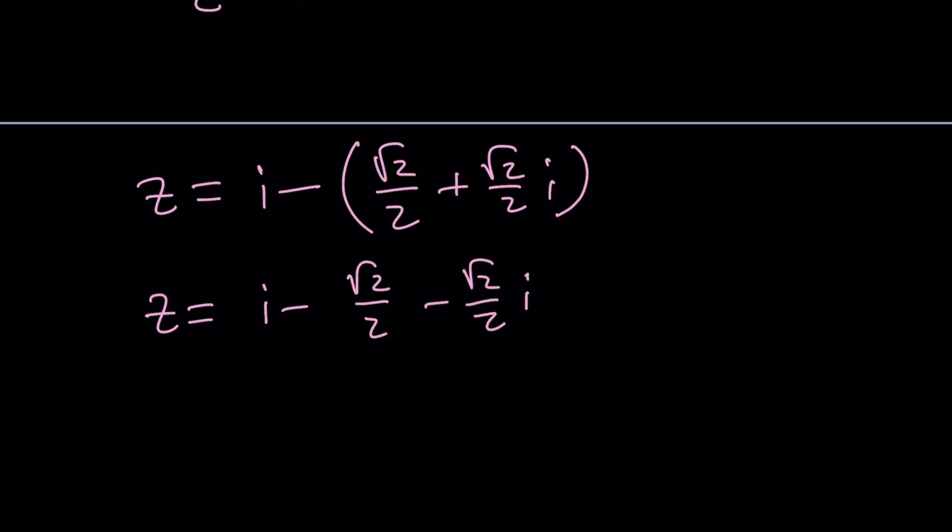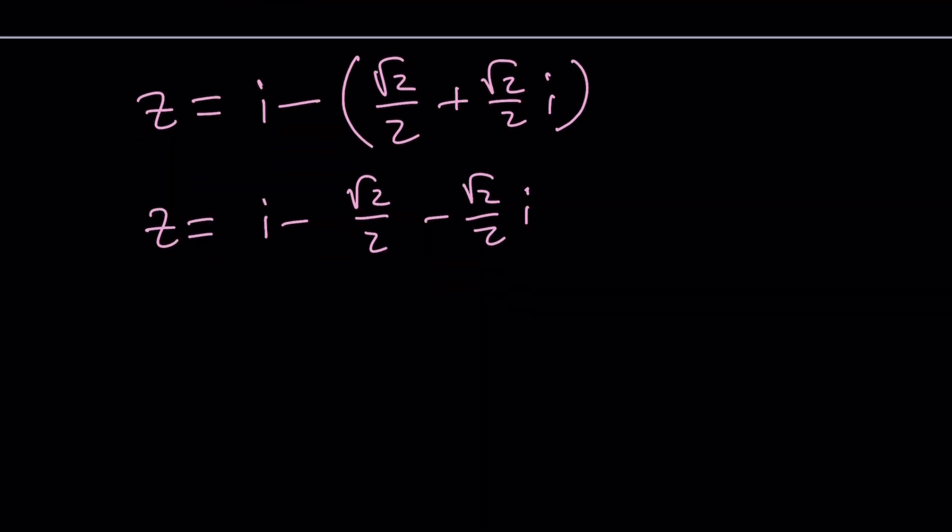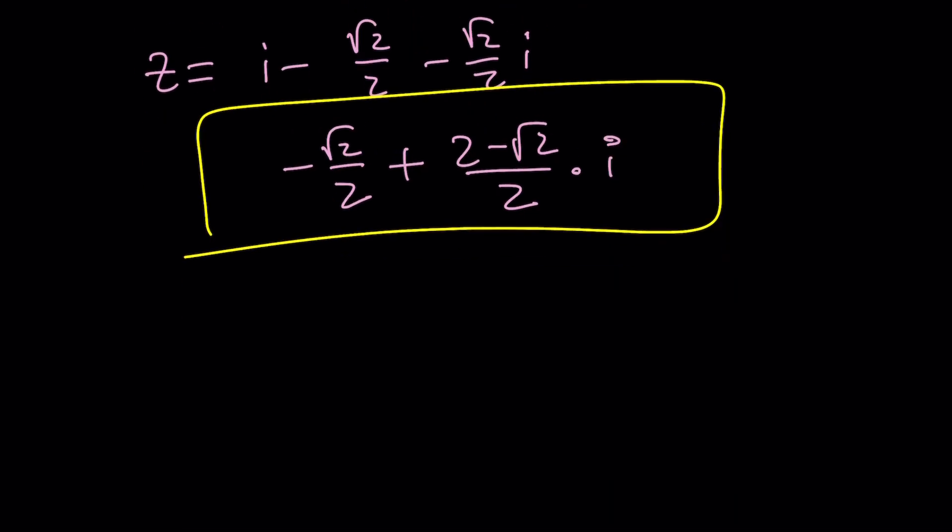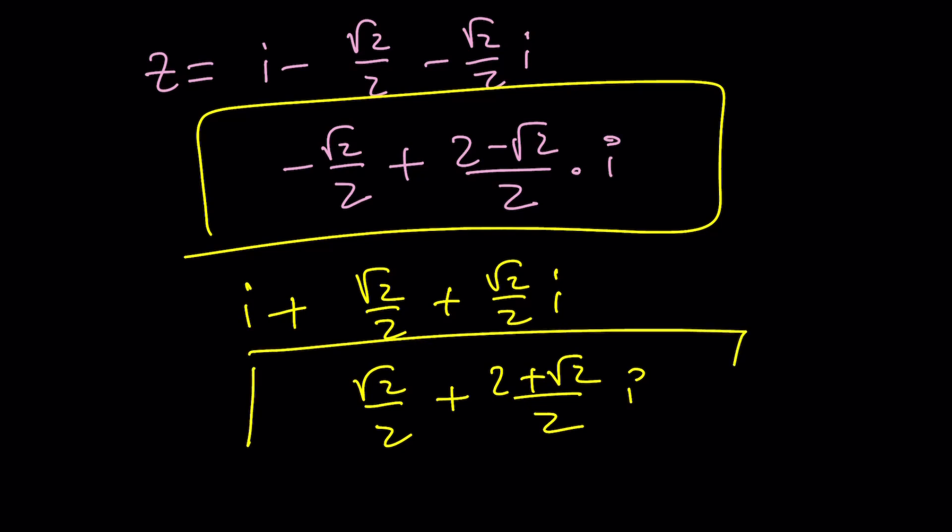This is going to be i minus root 2 over 2 minus root 2 over 2i. This is kind of 1i, 1 minus root 2 over 2. That's going to give us 2 minus root 2. So it's going to be negative root 2 over 2 plus 2 minus root 2 over 2 multiplied by i. And this is one of the solutions for Z, right? And the other solution is just going to be I minus the opposite of that. So it's going to be all plus. Make sense? And from here, we should be getting something like positive root 2 over 2 plus 2 plus root 2 over 2i. If you want, you can also express these with the plus minus signs, but that's not super important. But those are going to be the two solutions.